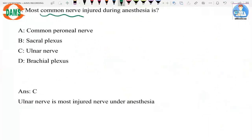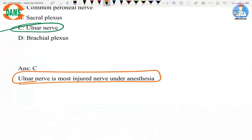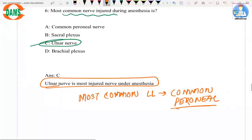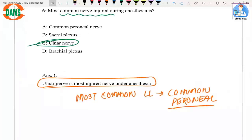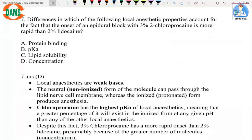The next is a straightforward question: the most common nerve injured during anesthesia is the ulnar nerve. In the lower limb, the most commonly injured nerve is the common peroneal nerve. These are important facts to remember.